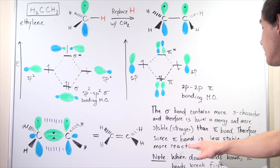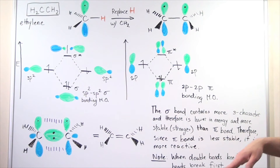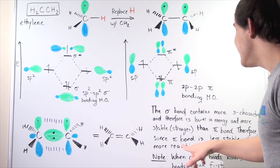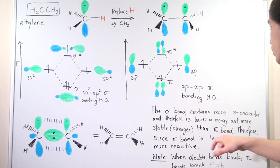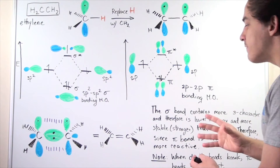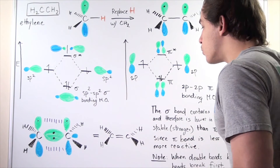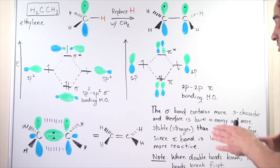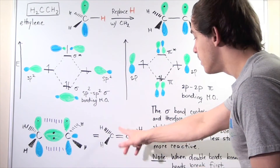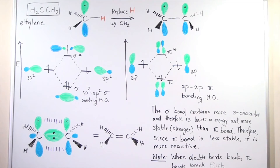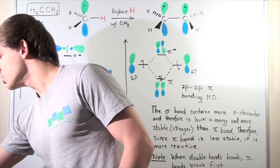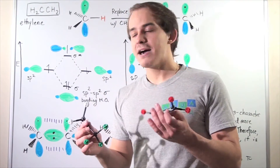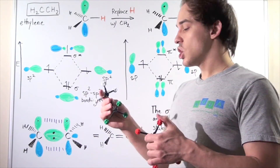The pi bond is less stable because it's higher in energy, and therefore more reactive. Whenever we input energy to break a double bond, the pi bonds break first.